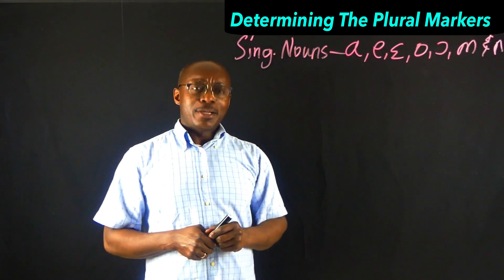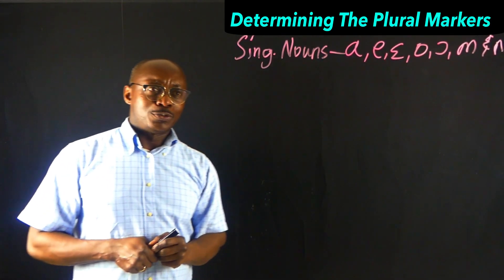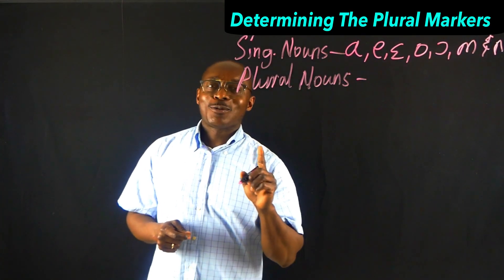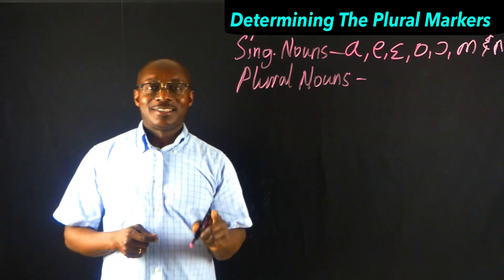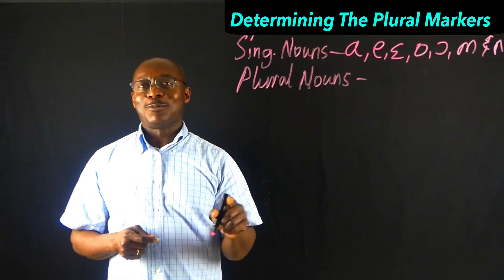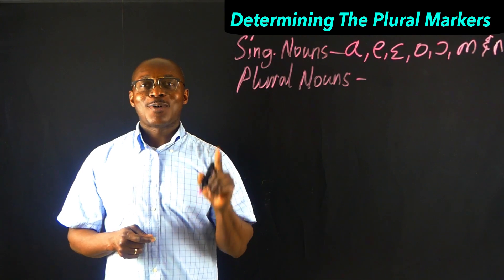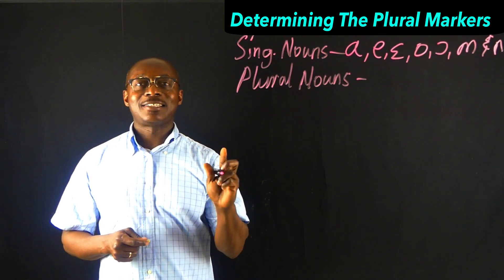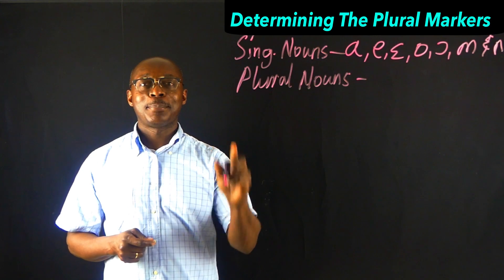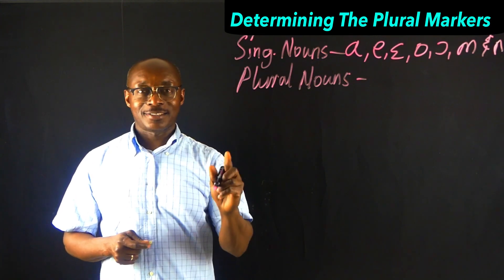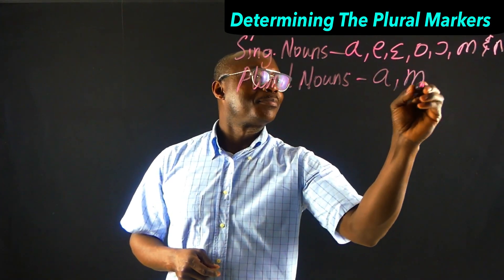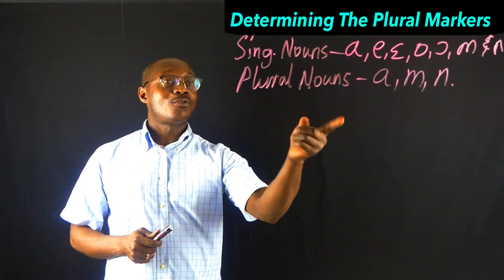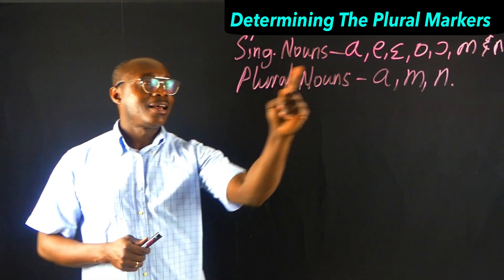What about the plural nouns? We have learnt that the plural nouns also have three prefixes, and those are A, M, and M. These are the prefixes of the plural nouns.